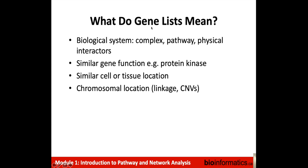Gene lists have a meaning, and you have to understand that meaning to understand how to interpret them. A gene list might relate to a biological system where we want to understand protein complexes, pathways, or physical interactions. A particular screen might identify genes related to a molecular function like protein kinases, or a similar cell or tissue location, or a chromosomal location. These lists of genes have very different meanings, so we need to understand that meaning to know how to interpret the gene list.